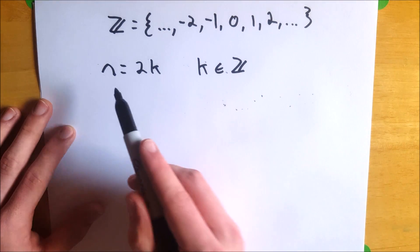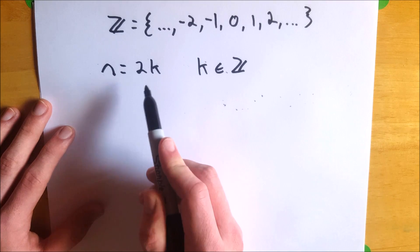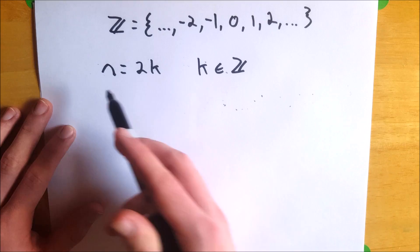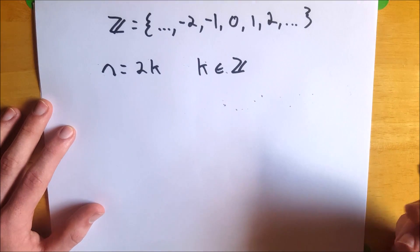So if you can write n, some number n, as 2k for some k that's an element of the integers, then n is indeed an even number.